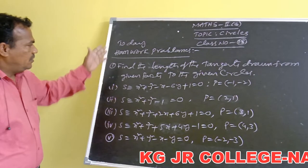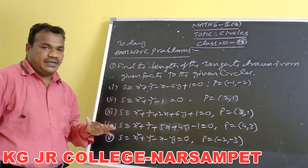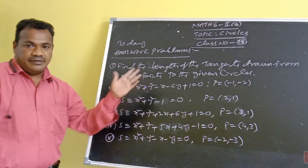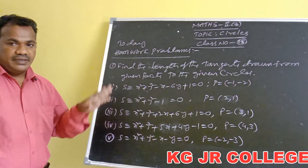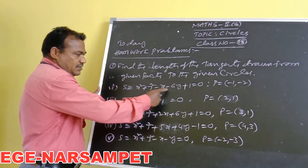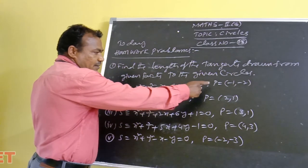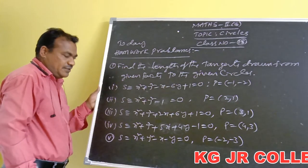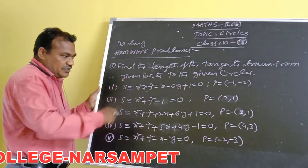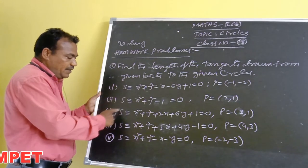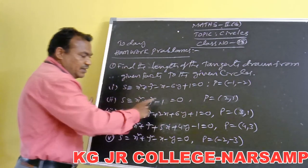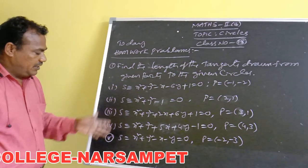Here are today's homework problems based on the length of the tangent. Given a circle and an external point, find the length of the tangents. Problem: circle x² + y² - x - 6y + 1 = 0 and point P(-1, -2). Listen carefully, write down the problems, and complete the homework properly.